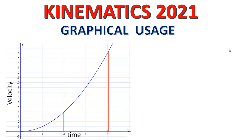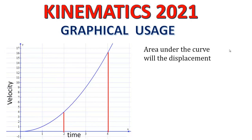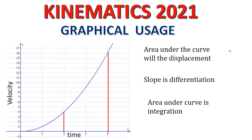The area under the velocity versus time curve gives the displacement traveled by the body between those two time points — here between 2 seconds and 4 seconds. Slope corresponds to differentiation and area under the curve corresponds to integration. These are the basic properties of the graph that will help us understand kinematics very well.